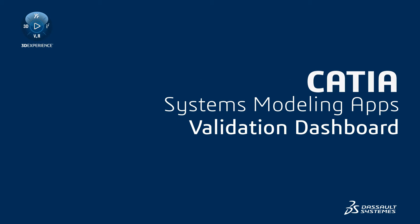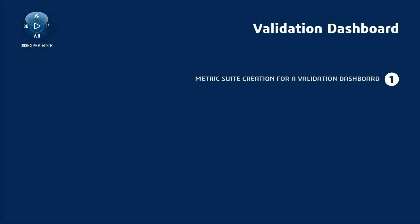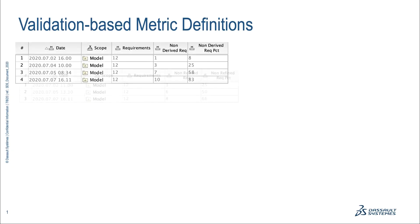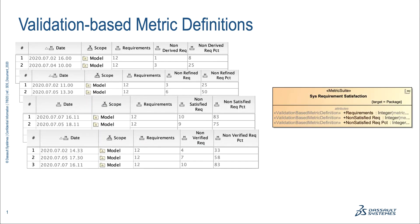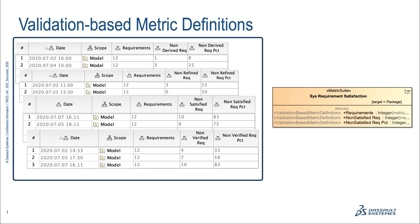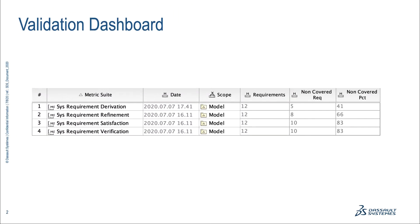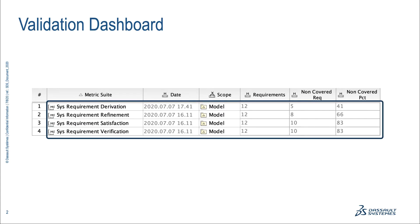This video demonstrates how to create a metric suite for the Validation Dashboard and explains how to build the Validation Dashboard. If you have more than one metric table for calculating metrics using metric suites with validation-based metric definitions, you can display validation results from these tables in a Validation Dashboard. This dashboard allows you to track all validation results in one place.